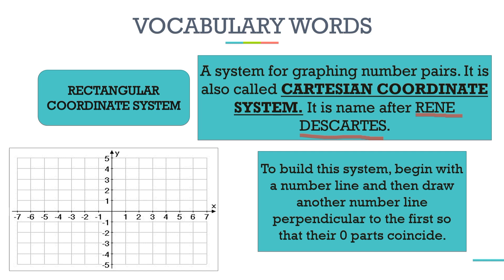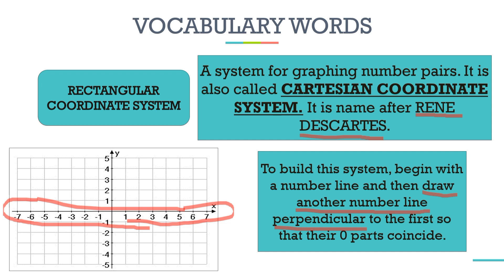To build the system, begin with a number line. The example of a number line is this line here. Then we will draw another number line, perpendicular to the first. What does perpendicular mean? We will draw another number line which is perpendicular to the first one, so that their zero parts coincide. So their zero parts will meet at this point.